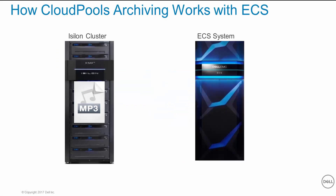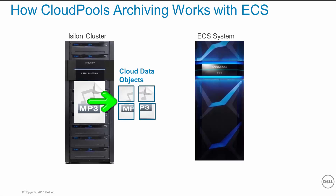Let's start off by discussing what happens when we archive files to ECS. In order to optimize performance of objects being sent to the cloud, files are split into 1 megabyte chunks called Cloud Data Objects. If a file is less than 1 megabyte in size, the CDO size is equal to the size of the file. If configured in the File Pool Policy, the objects will be encrypted and compressed before being moved to the ECS cloud.